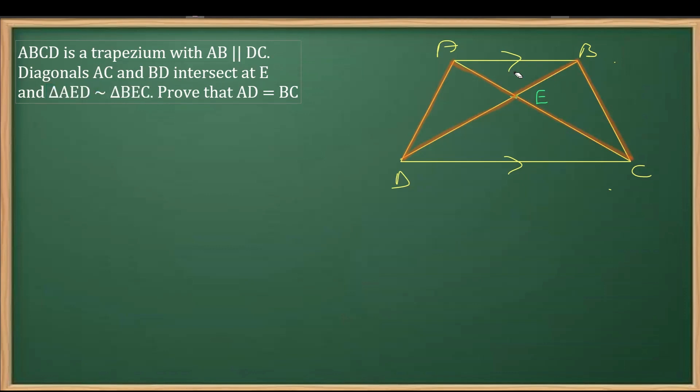What we have to prove is that AD is equal to BC. The length of AD equals the length of BC is what we need to prove.